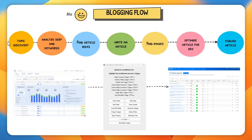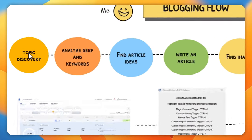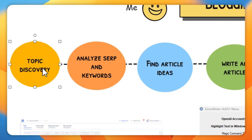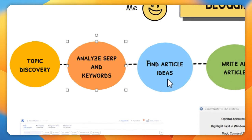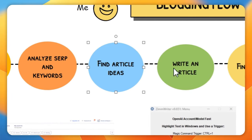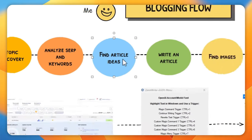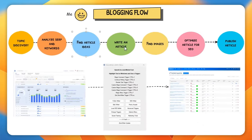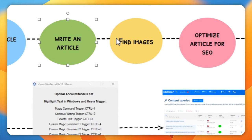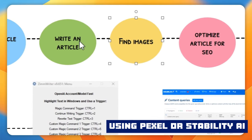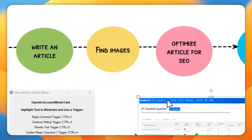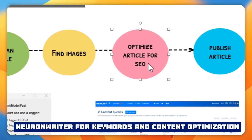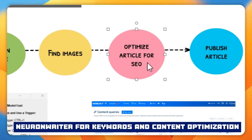So this is my typical workflow. I usually start off with topical discovery, analyzing the search engine results, and then generating the ideas. Once I've got the ideas and know what articles I want to write on, I go ahead and write an article and find images for it. Then I use something like NeuronWriter to optimize for SEO purposes, and then I go ahead and publish the article.